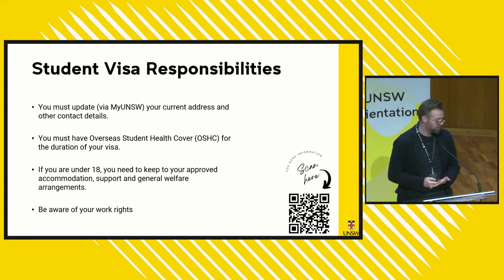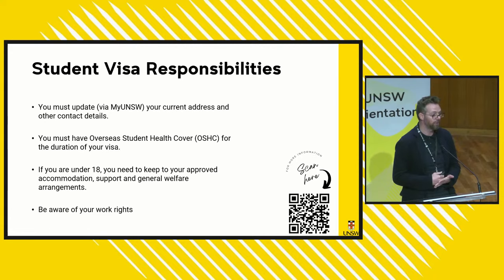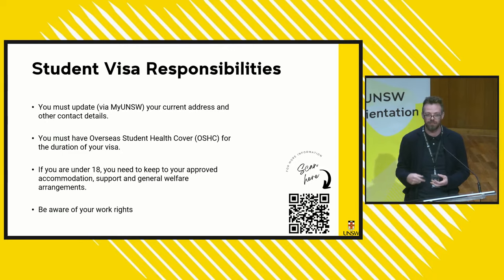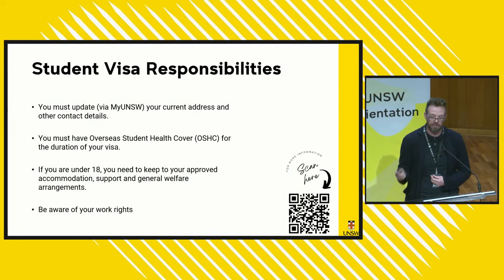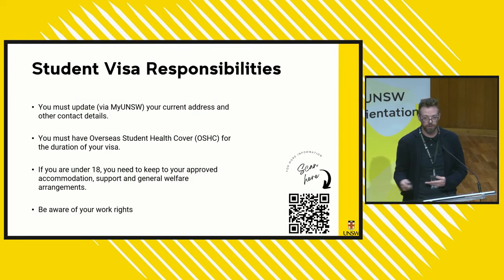Some more student visa responsibilities: you need to inform UNSW of your accommodation — your current residential address now that you're here in Australia. If you're staying somewhere temporarily, once you've found a permanent long-term address, within the next seven days please log in to myUNSW and update your address details, your mobile number and a personal email address. If you don't, during the term we can pick up on that and we'll send emails asking you to update those changes.